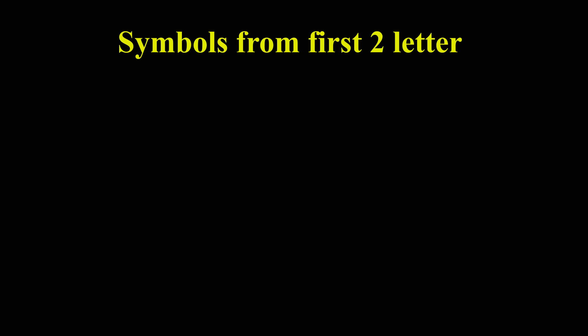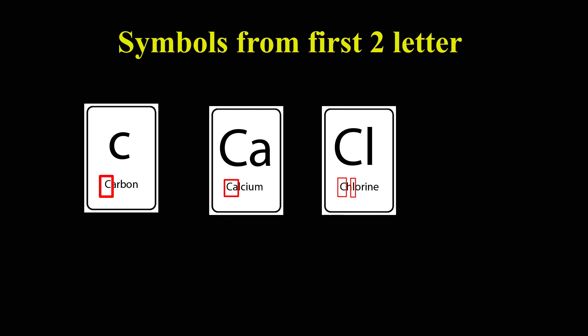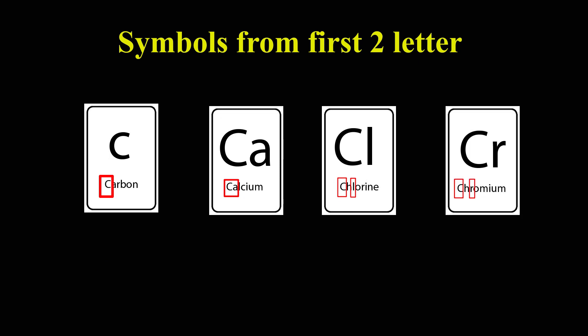Similarly, the symbol for carbon is C whereas the symbols for calcium, chlorine, and chromium are Ca, Cl, and Cr, respectively.